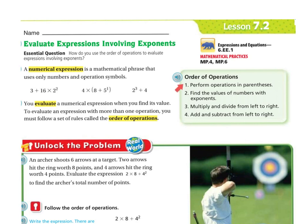First, you perform the operations that are in parentheses. Then you find the value of numbers with exponents. Then you multiply and divide from left to right — it could be divide before multiply, it just depends on what comes first from left to right.